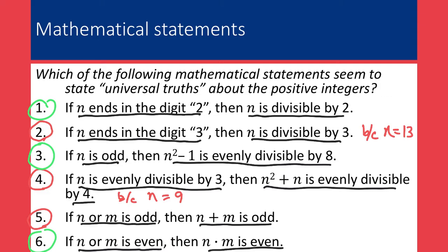For statement number 5, we remember that the 'or' in statement 5 is an inclusive or, so it's okay for both things to be true. Something like n equals 1 and m equals 3 would be an example showing that statement 5 is false — because '1 or 3 is odd' is a true statement, but '1 plus 3 is odd' is a false statement. In all the cases where we decided a statement was false, we were able to find an example that made the first property true and the second property false.